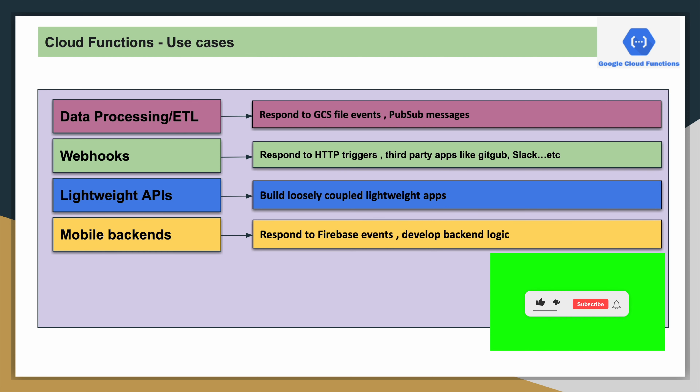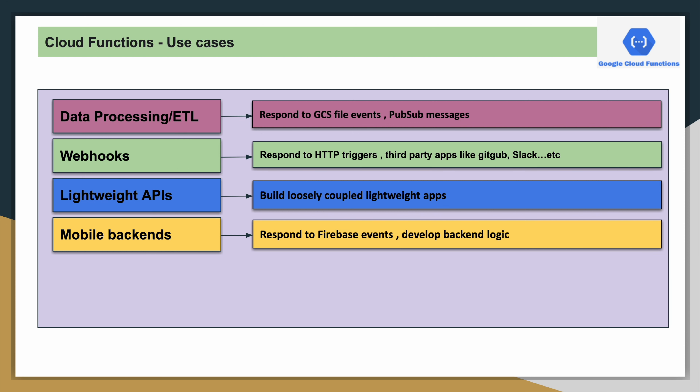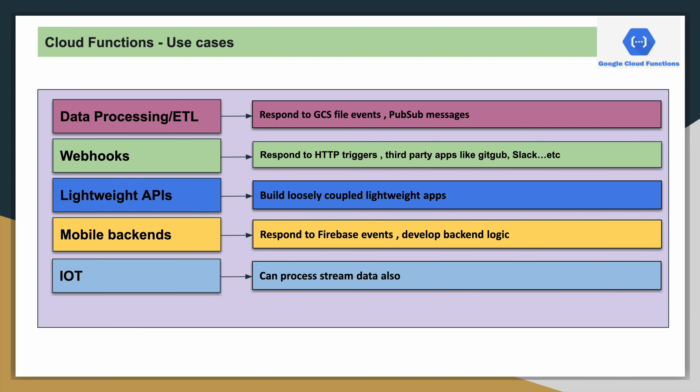For mobile backends, you can write your logic and recognize Firebase events, and completely develop backend logic. You can also process stream events using Cloud Functions coming from IoT devices. These are the few major use cases, and in upcoming videos we will see each one, where you will learn the advantages of writing and deploying code into Cloud Functions.